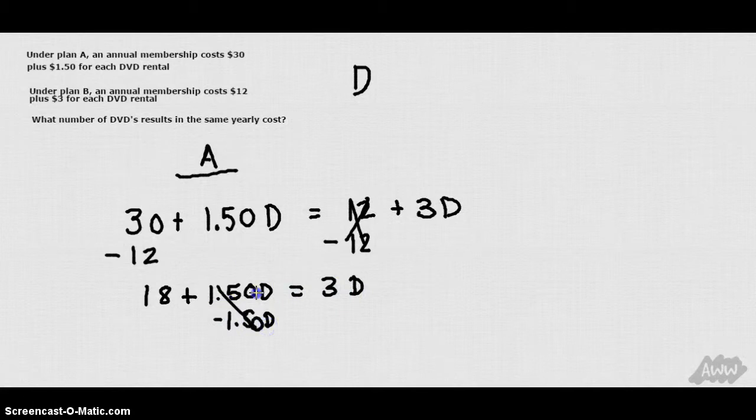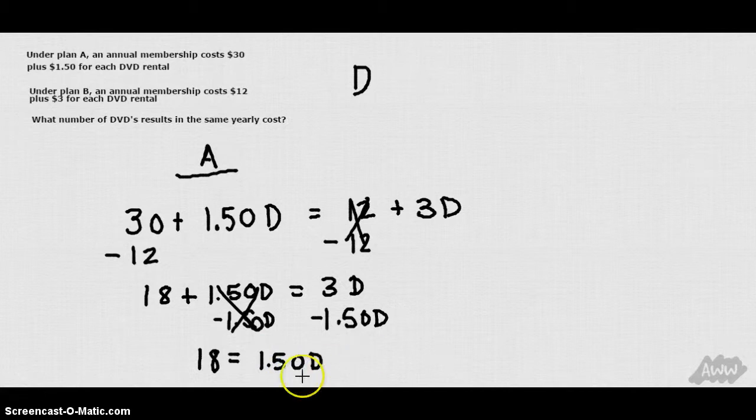Let's take away $1.50D from each side. We get $18 equals $3D minus $1.50D which is $1.50D. We have to divide $1.50 from each side.